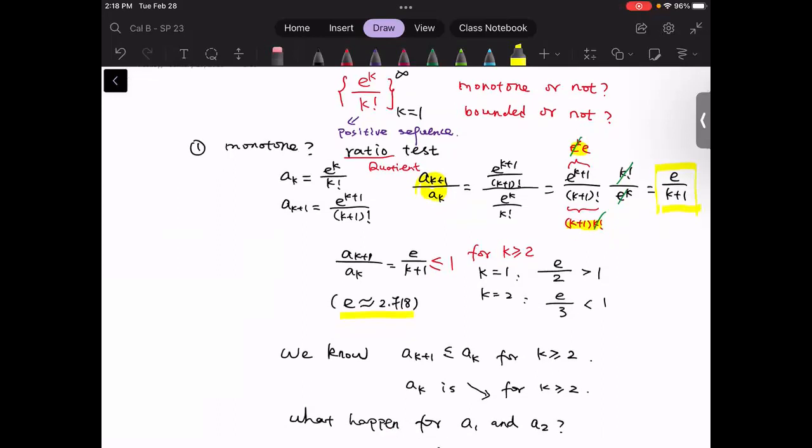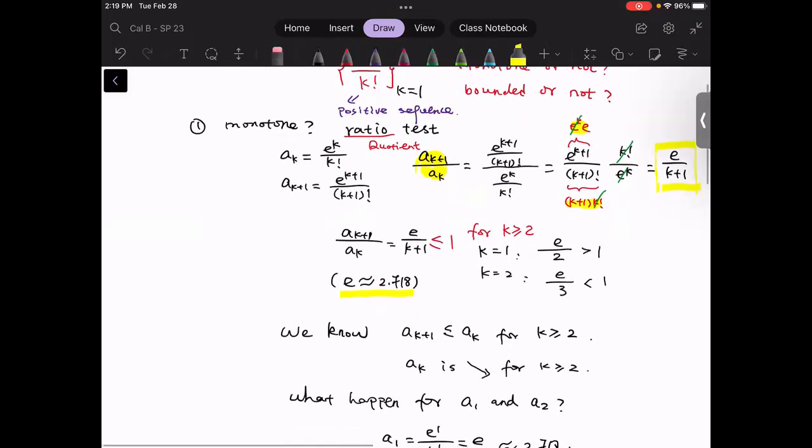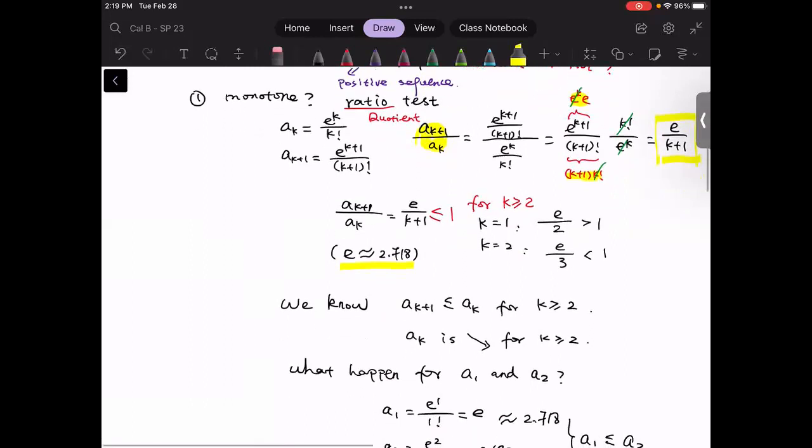Notice that the number e is approximately 2.718. We know for the quotient test, we would like to compare this ratio with the number one. Is it less than one or greater than one? Since this is a constant divided by (k+1), then obviously this value depends on the choice of k.